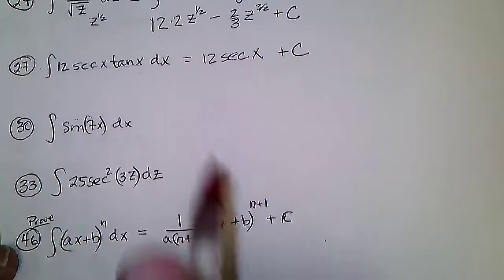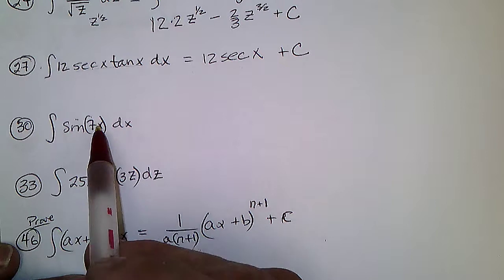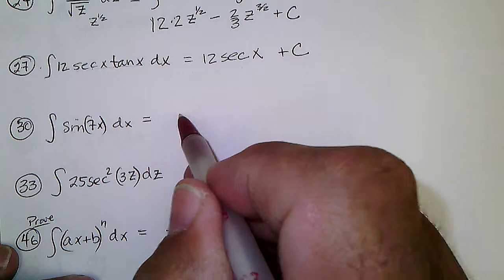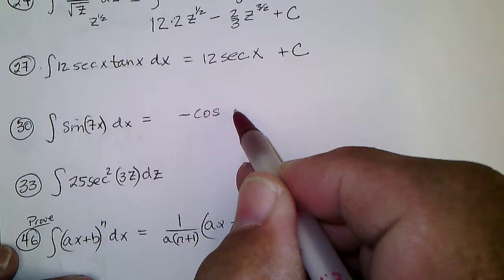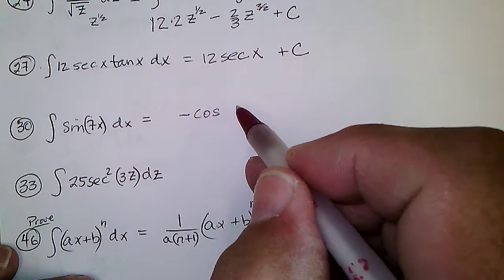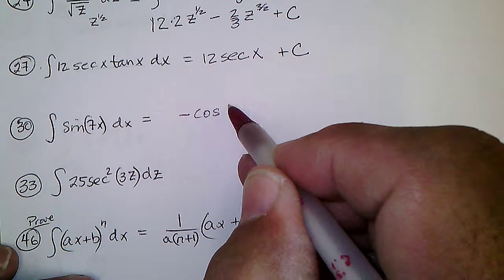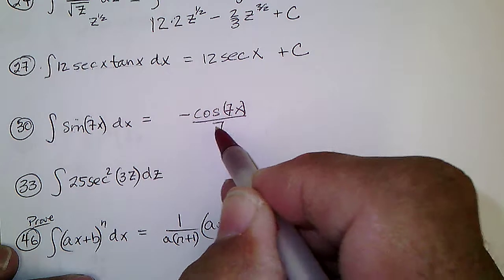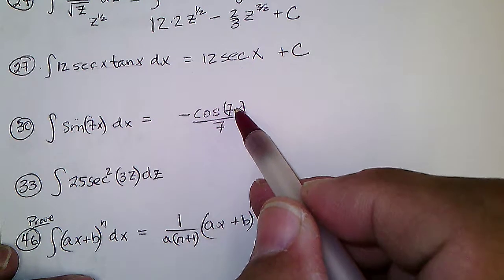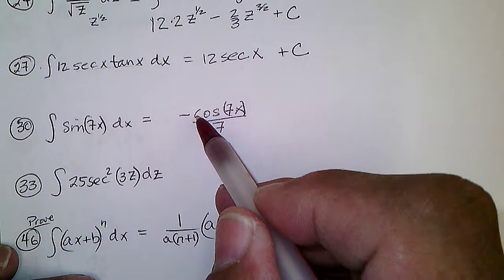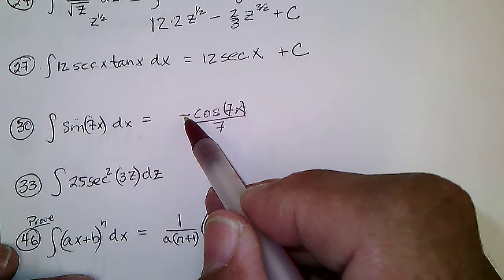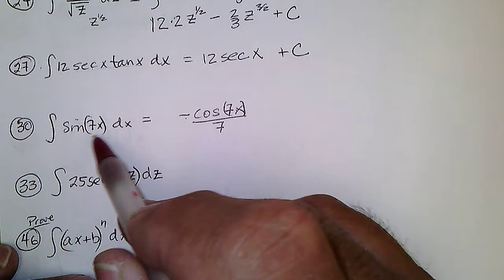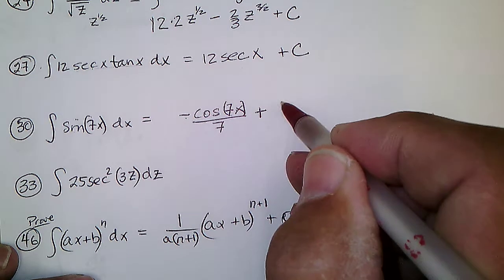Problem 30: the chain rule would create a 7, but what function has derivative of sine? The derivative of negative cosine x is sine x, but we want it to be sine of 7x. So we divide by 7, so that the derivative of cosine of 7x is negative sine, making it positive, of 7x, times the derivative of the inside times 7 — which cancels the 7 — making it sine of 7x, plus C.